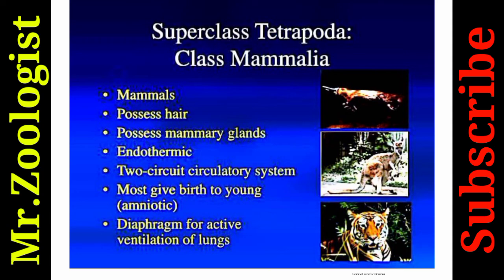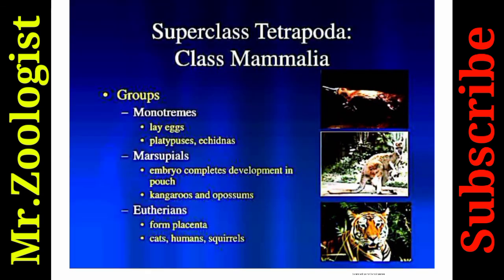Most mammals give birth to live young and are amniotes. They possess a diaphragm for active ventilation of lungs. Groups include: Monotremes, which lay eggs (e.g., platypuses); Marsupials, where embryos complete development in a pouch (e.g., kangaroos and opossums); and Eutheria, which form a placenta (e.g., cats, humans, squirrels).